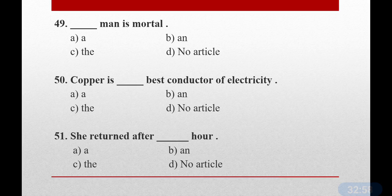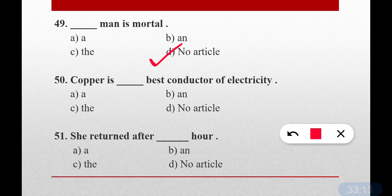Question number forty-nine: Dash man is mortal. No article is used here — man is mortal. That's it. Option D is the correct answer. These are set phrases you need to learn — they'll come up in exercises as well.